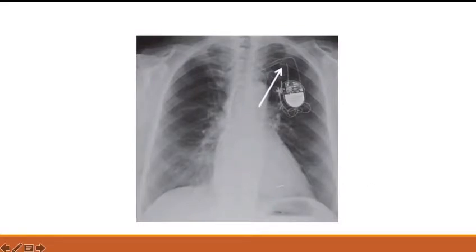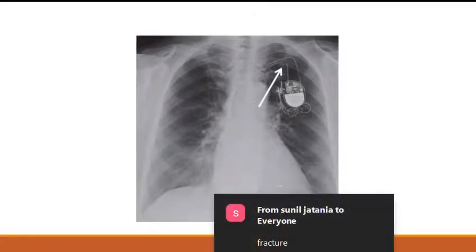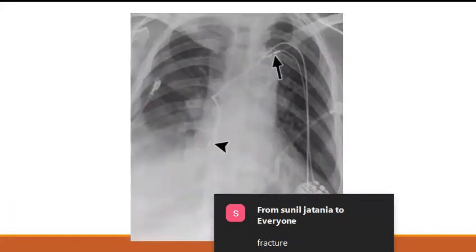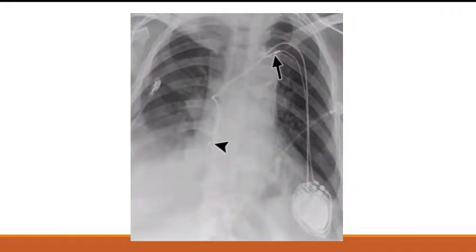There is a fracture of the pacemaker lead. Also, the pacemaker has been displaced — the lead has gone from the thoracic cavity into the abdominal cavity. The atrial lead should have been here and the ventricular lead should be here — this is displacement of the leads.